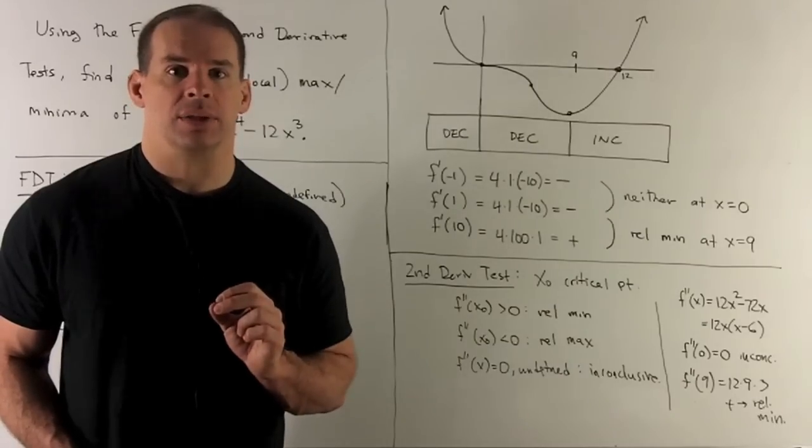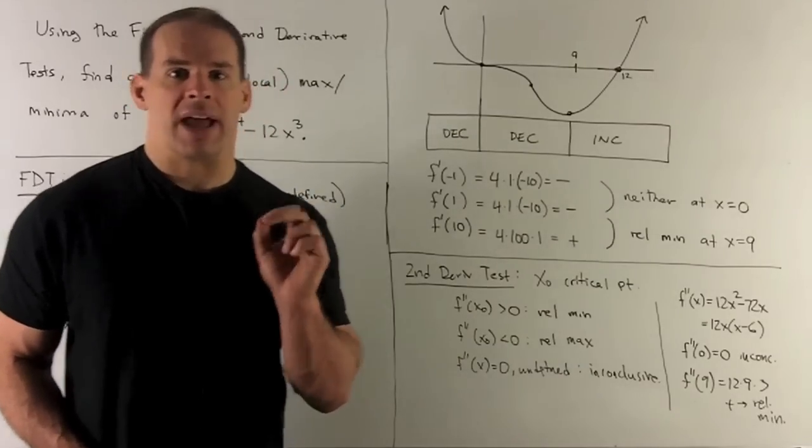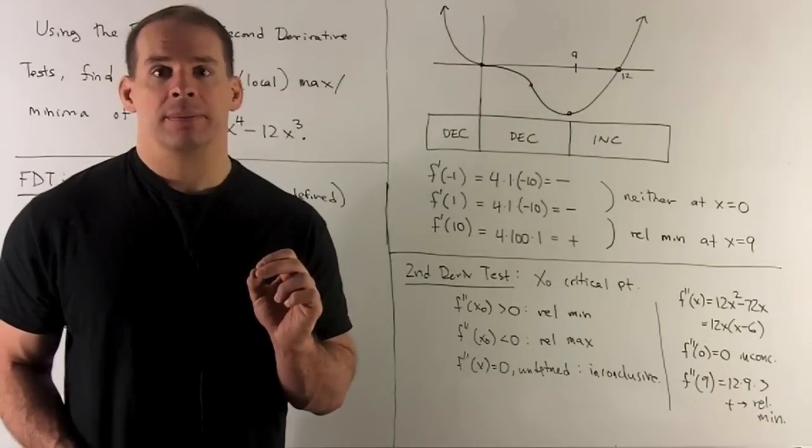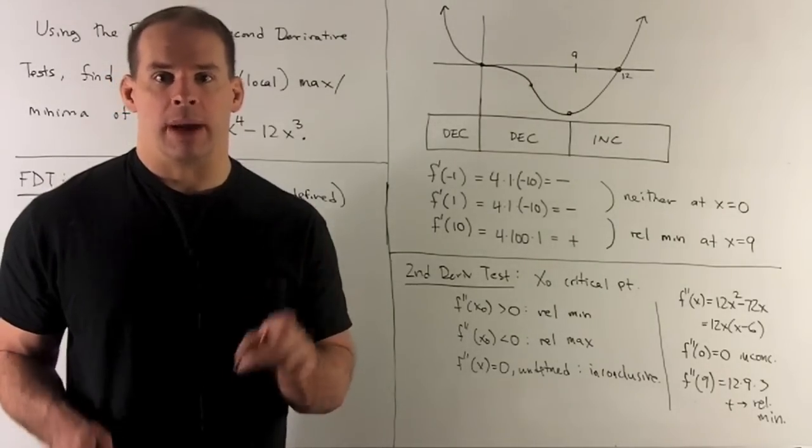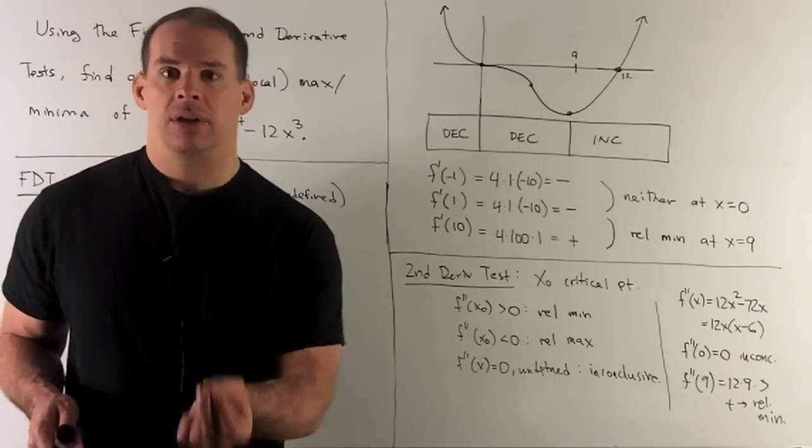How about the second derivative test? What does this say? x0 is a critical point. We apply the second derivative to x0. If the answer is positive, we have a relative minimum. Remember, if it's positive, we're concave up, so that means we're at the bottom.